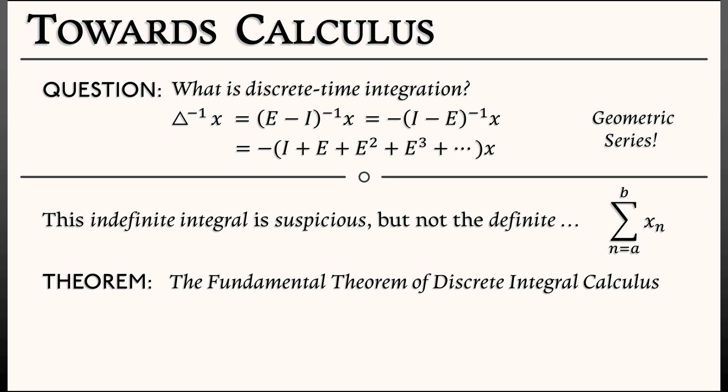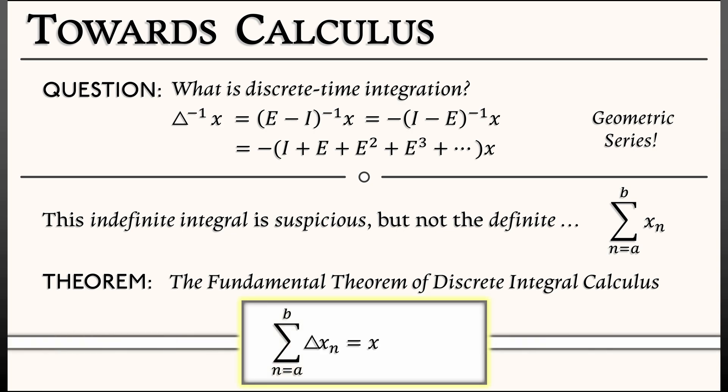In this case, the discrete version of the fundamental theorem is that the sum as n goes from a to b of delta of xn is really going to be xb plus 1 minus xa. So I take the derivative of the original sequence, and then I integrate that from a to b, and I get the original sequence evaluated at the endpoints. Now, you might know this as a telescoping sum. So the proof of this is really trivial. I mean, there's nothing there at all.